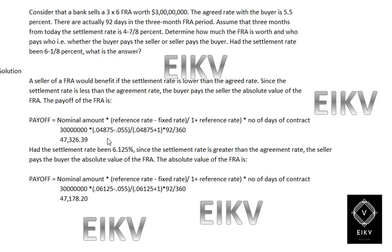The final figure is 47,326.33. For the second scenario, had the settlement rate been 6.125%, since the settlement rate is greater than the agreed rate, the seller pays the buyer the absolute value of the FRA. The payoff formula is: nominal amount into (reference rate minus fixed rate) divided by (1 plus reference rate into number of days). With reference rate 0.06125 and fixed rate 5.5%, the result is 47,178.20.